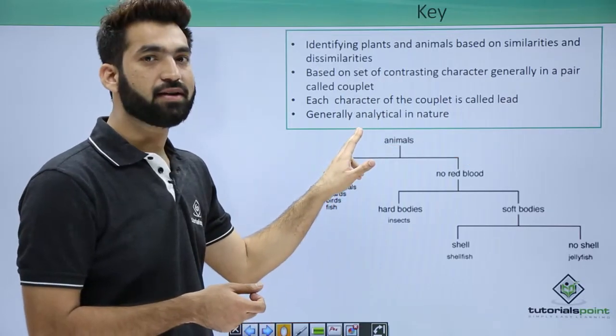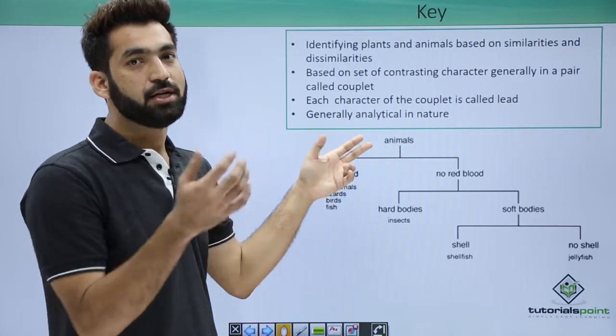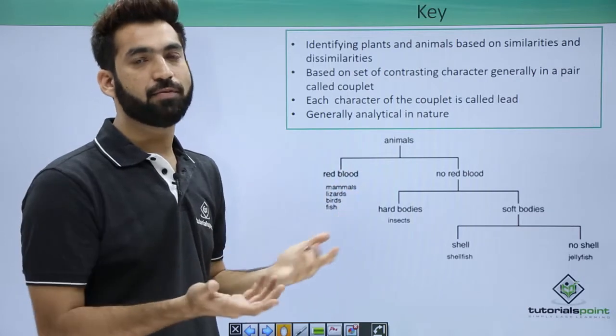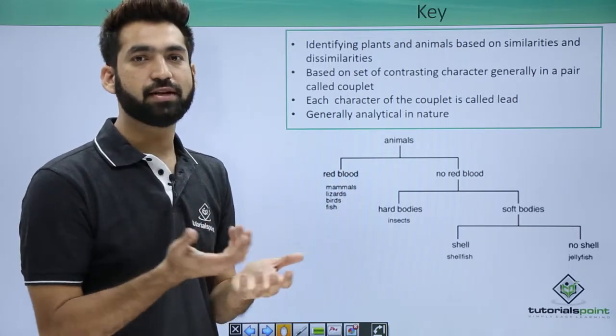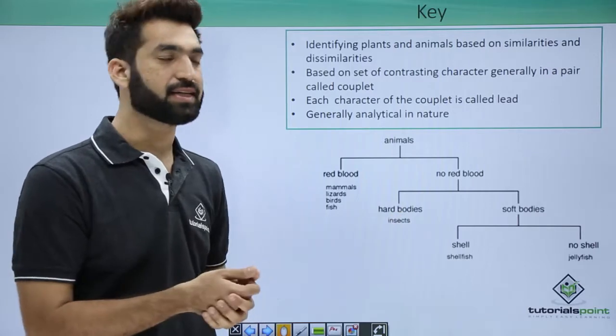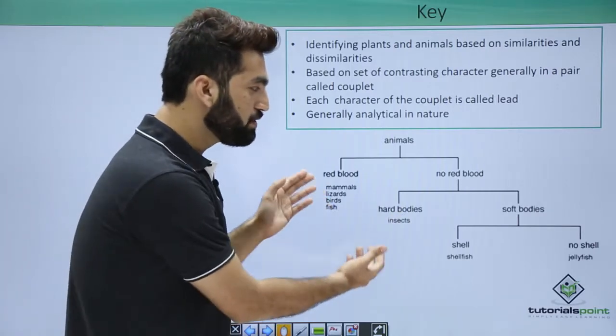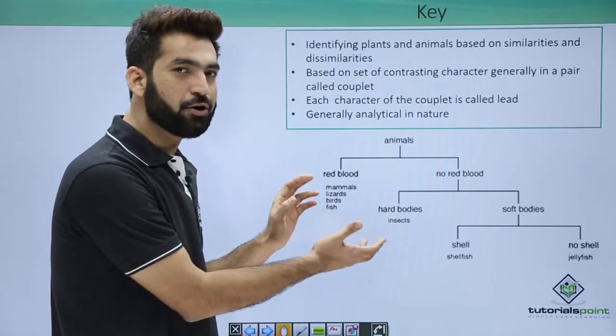Remember one very important thing: Khi are analytical in nature. So they can give you five taxonomic aids and ask you which among the following is analytic in nature. Your answer would be Khi. Now I have tried showing one of the keys, like how you make keys.